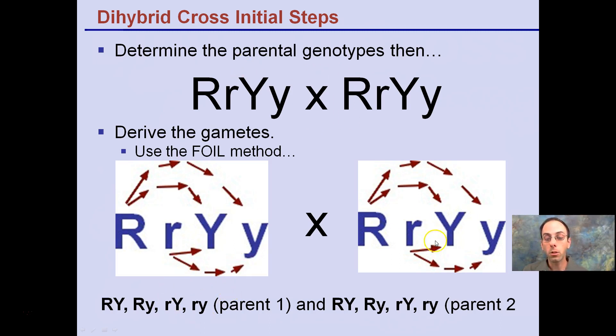Now because they're both the same, parent 2 has the same potential gametes for offspring. So big R goes to big Y, big R to little y, little r to big Y, little r to little y. These are our genotypes that we're going to use in our 4x4 Punnett square.